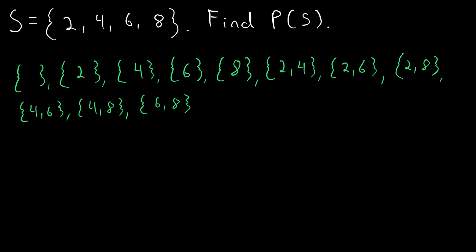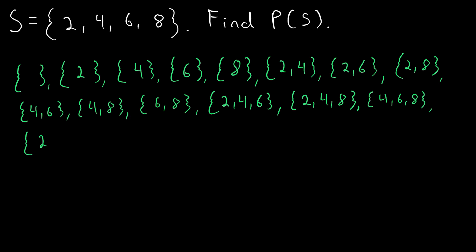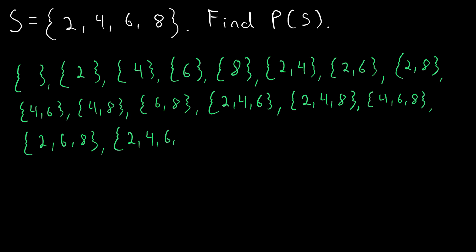Moving on to the three-element subsets. We've got the set containing two, four, and six; the set containing two, four, and eight; the set containing four, six, and eight; and the set containing two, six, and eight. To check: the number of three-element subsets from a four-element set is four choose three, which equals four. We count one, two, three, four — correct. Then all that's left is four-element subsets, and the only one is S itself: the set containing two, four, six, and eight. We've now listed all the subsets.